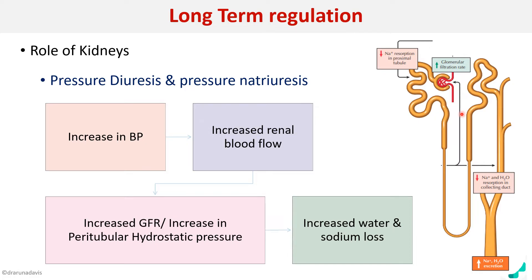Both of these will cause an increased water and sodium loss — that is, increased excretion of sodium and water — so that blood volume will decrease and BP will return to normal. Diuresis means excretion of water, and natriuresis means removal of sodium through urine.